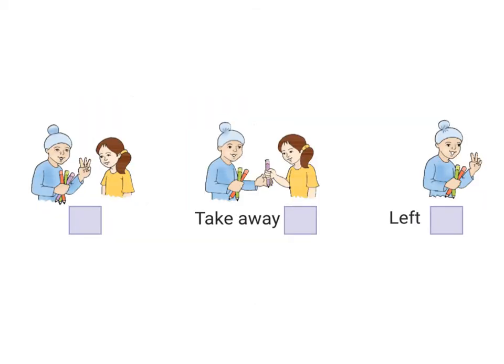Let's do another example. Raja has how many pencils in his hand? Let's start counting. There's 1, there's 2 and there are 3. So Raja has 3 pencils in his hand. His friend Sita takes away how many pencils? That's just 1. So she takes away 1 pencil.